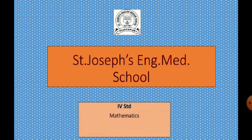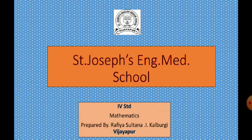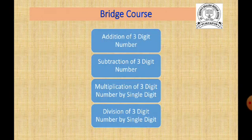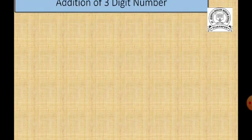Bridge course means just revising the things which we have learnt in the earlier class. In the earlier class, that is the third standard, you have learnt addition of three-digit numbers, subtraction of three-digit numbers, multiplication of three-digit numbers by a single digit, and division of three-digit numbers by a single digit. We will solve each of these by doing problems. So first we will do addition of three-digit numbers.